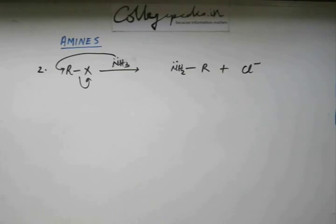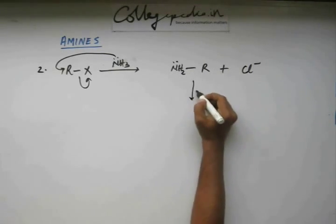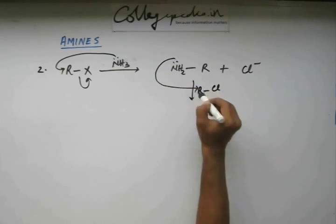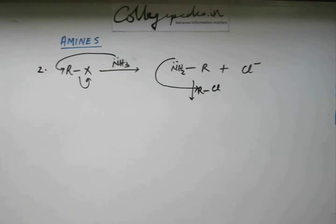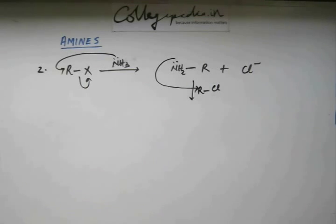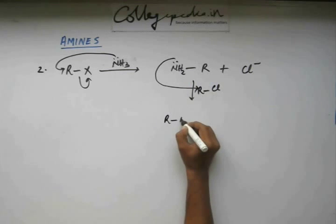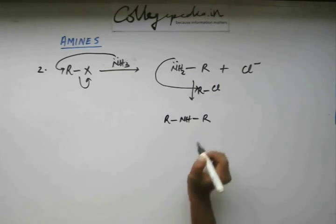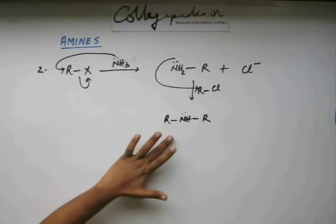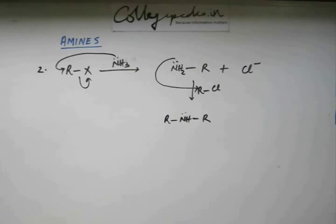The problem with this primary amine is that nitrogen still has a lone pair, so it is also capable of further reaction. If there are more unreacted alkyl halides left, this amine that has formed can also go for SN2 substitution just as ammonia did. When that happens, we get a secondary (two degree) amine.